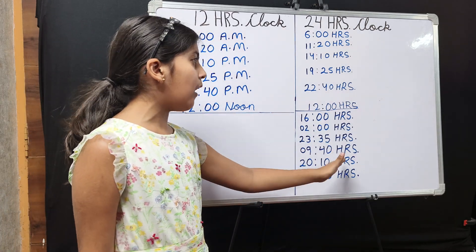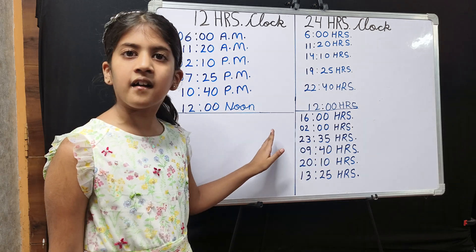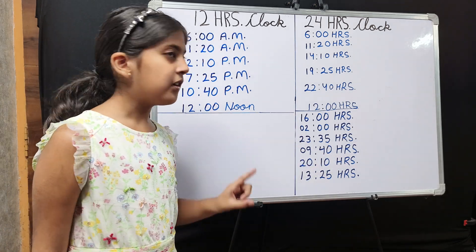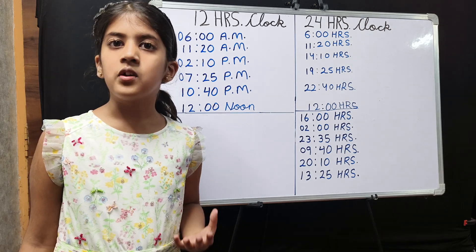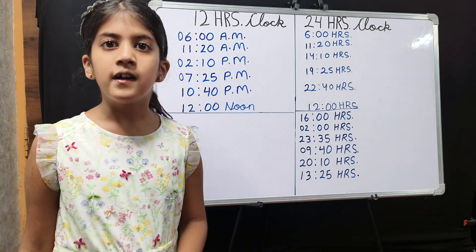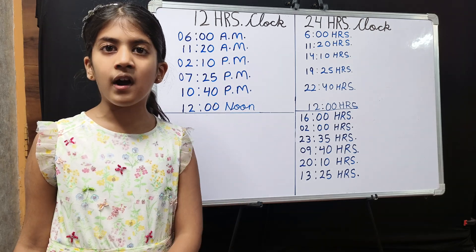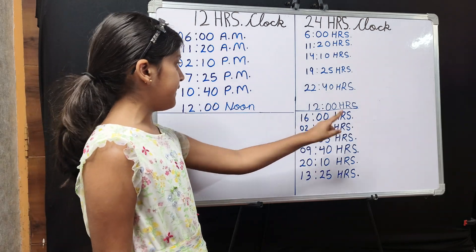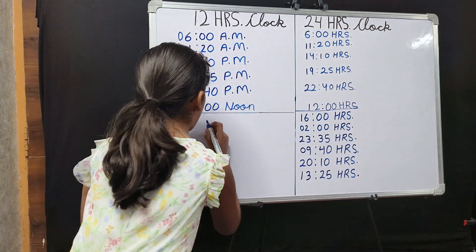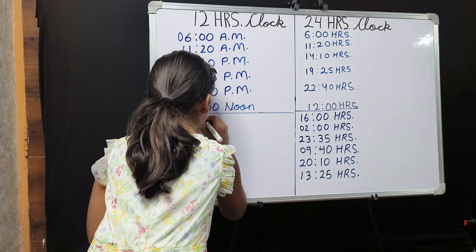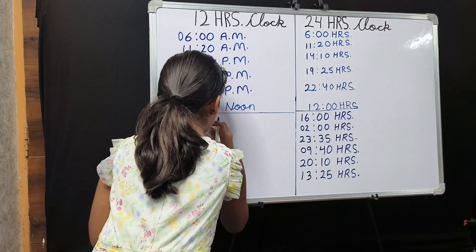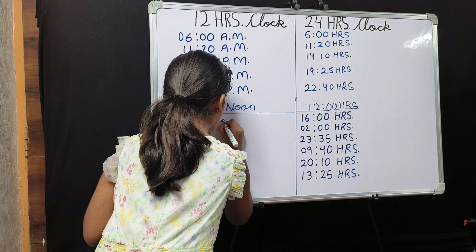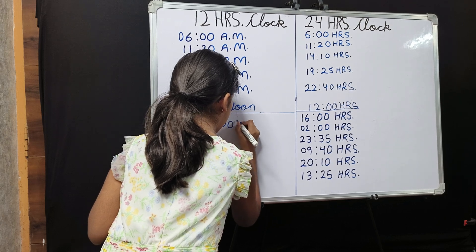1600 hours. In 1600 hours, I will check the hours. The hours are 16, which is more than 12, so we can minus 12. 16 minus 12 is 4. I will write the zeros as it is and put PM. So my answer is 4 PM.